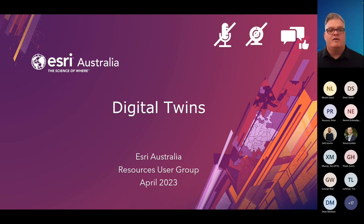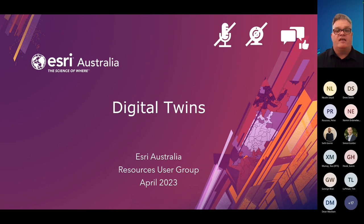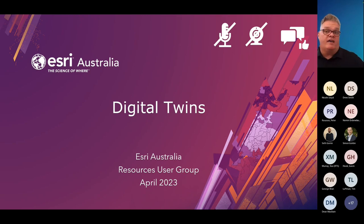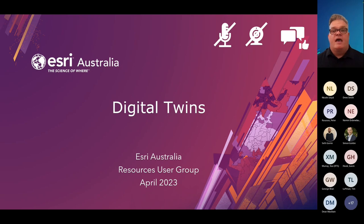This allows for quick decision making in response to changes in the environment, say in the case of a one-in-100-year weather event. Without this spatial referencing, it can be really difficult to understand the relationships between the different data sources and which assets or people may be in the path or at risk. Combining digital twins with GIS, we can create a more comprehensive and accurate representation of our real-world models.